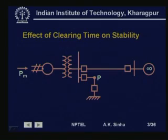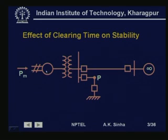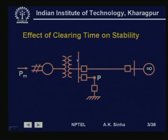Let us take a simple example where we have a synchronous machine connected to an infinite bus through a transformer and a transmission line. P_m is the mechanical input to the synchronous machine, that is the turbine-synchronous machine system. We have a load connected here. Suppose we have a fault which occurs at point P, adjacent to this bus bar, so we can assume this fault to be almost the same as being on this bus.